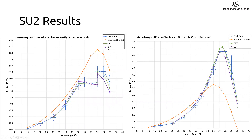Now we've added the SU2 results to the same plot in the purple line, and the results are quite good — good agreement with the test data and CFX. There's a little bit stronger under-prediction from SU2 at the higher angle points at 70 and 75 degrees — CFX under-predicted as well, but SU2 was under-predicting a little bit more. On the subsonic case though, results were also very good, and SU2 was very accurate at the peak torque region — doing a little better job than the CFX setup for those points. But then again at the higher valve angles, SU2 tended to under-predict torque a little more than CFX.